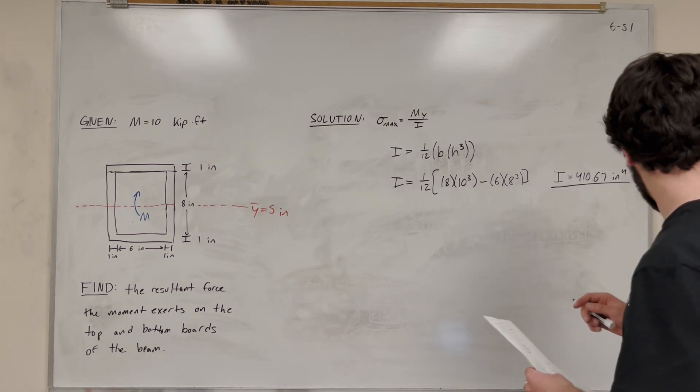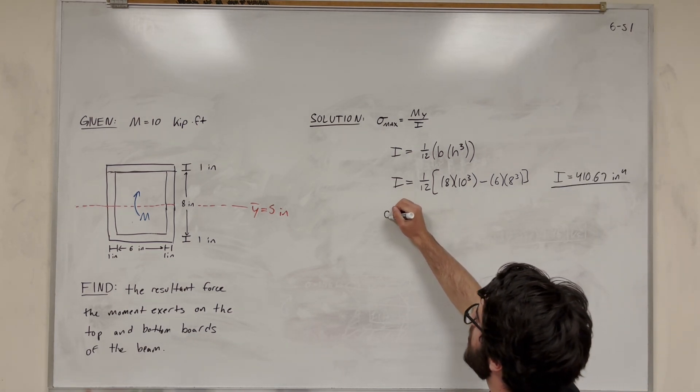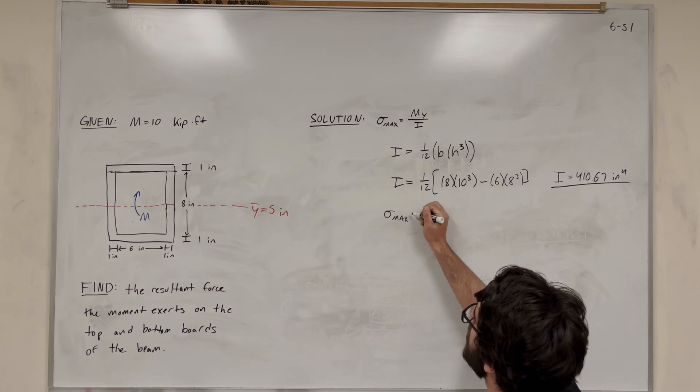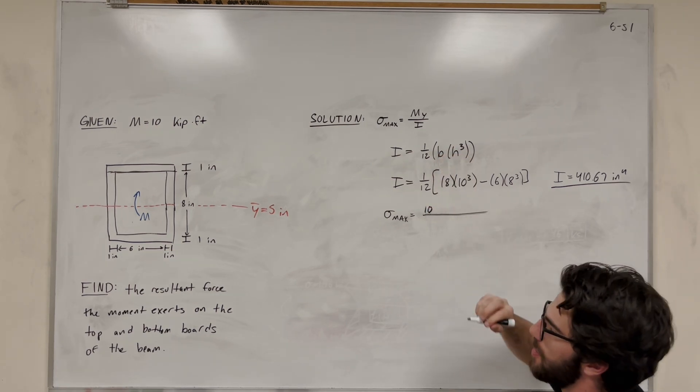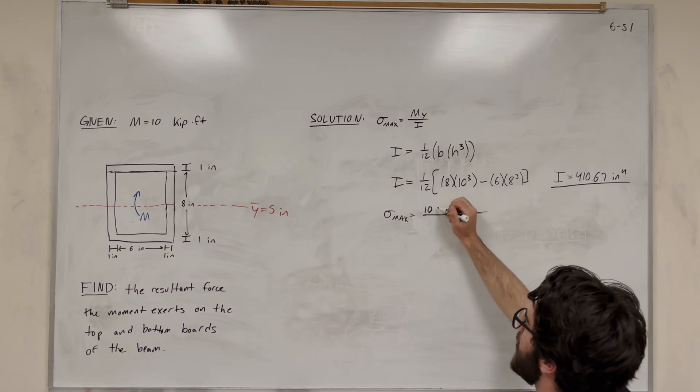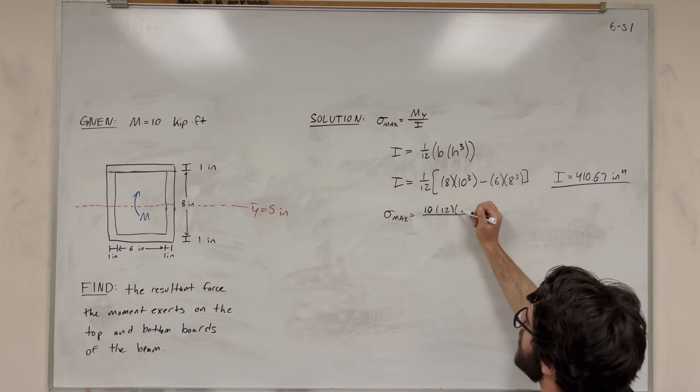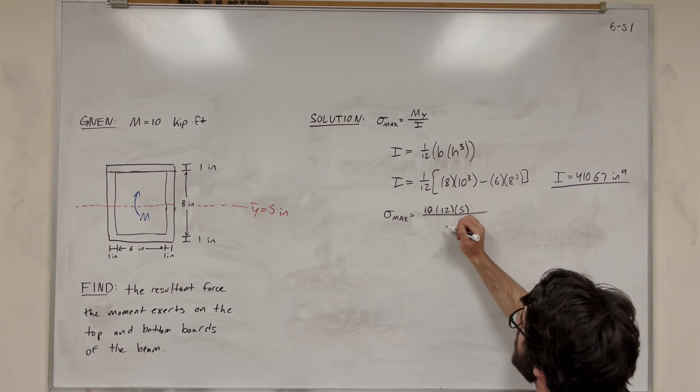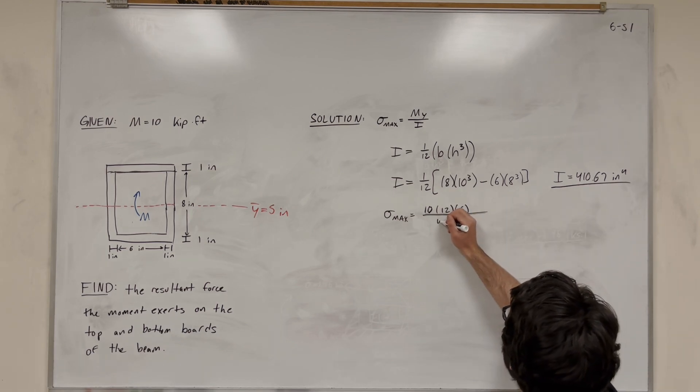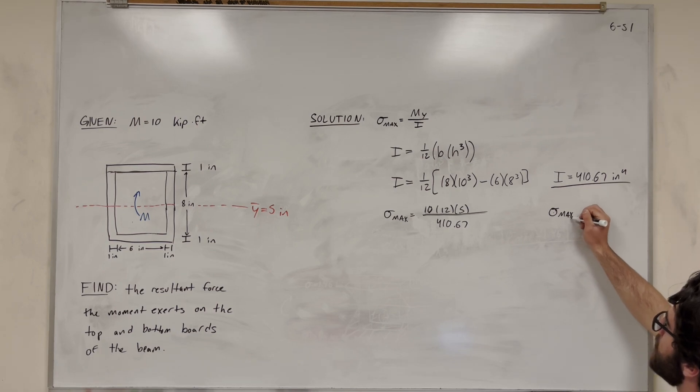So then all we need to do is find the maximum bending stress. Let's plug it all into the equation. It equals the moment, which is 10 kip feet. However, we're going to convert to inches so we can get to KSI, so we multiply by 12 to convert from feet to inches. Then multiply by distance, which is 5 inches to the top. Then divide by moment of inertia, 410.67. We find that our max bending stress equals 1.46 kSI.